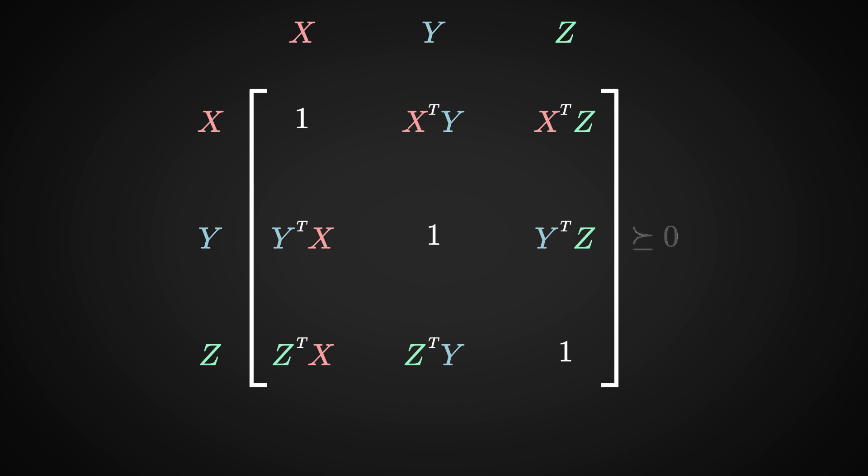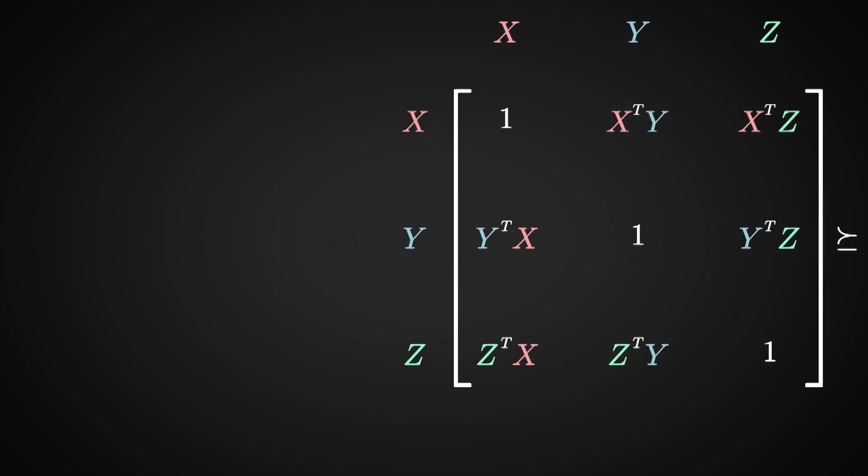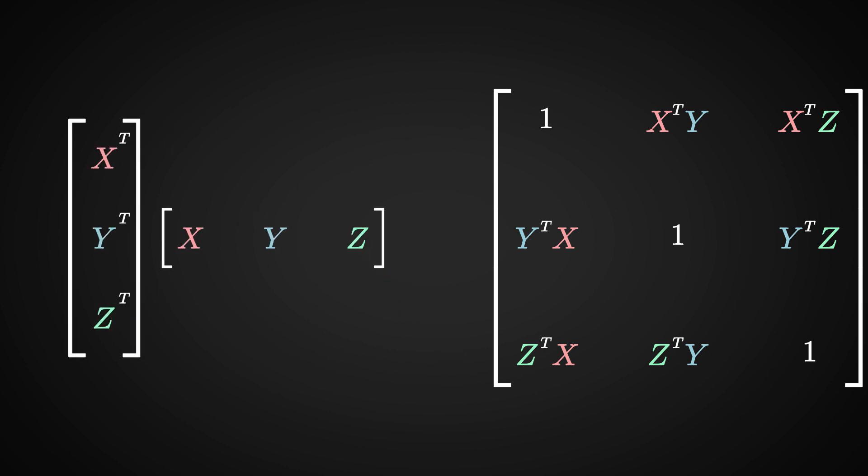Now, here is a question for you. Can you see why this matrix is positive semi-definite? If you say that this is because it has a square root, you are 100% correct. If you put the vectors x, y, and z next to each other to form a matrix, and you take the square, you get back the matrix of inner products.